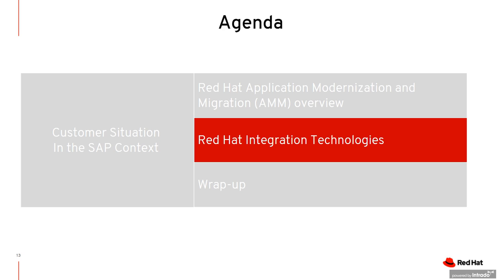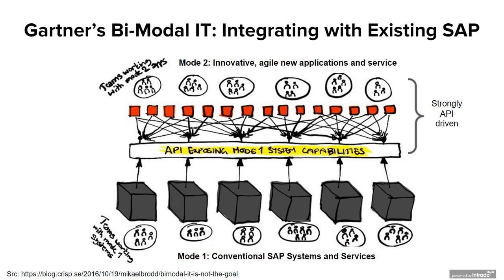Thank you, Pierluigi. My name is Manfred. I am the sales lead for EMEA for Agile Integration, which is Red Hat's go-to-market message and bundle that includes all the various different integration technologies. Pierluigi spoke about our method, Application Modernization and Migration, or AMM, that we can use to migrate and modernize different infrastructures and landscapes. Now I would like to talk about some of the core technologies that Red Hat offers in the integration space and beyond. You're probably familiar with this very famous Gartner model — it's called the Bi-Modal IT.